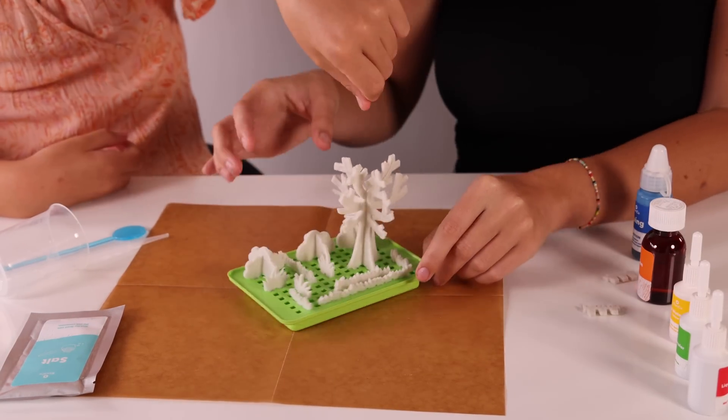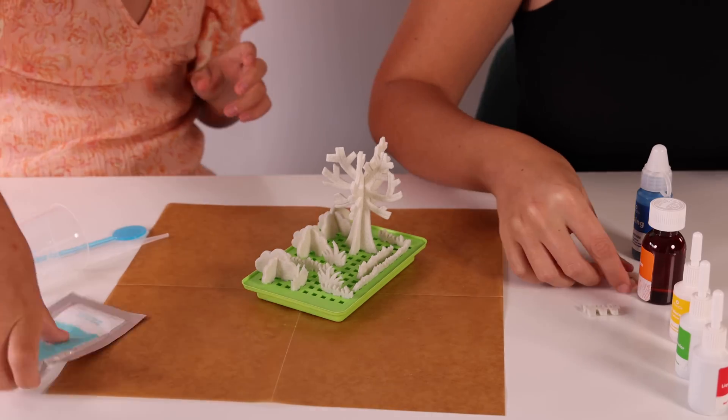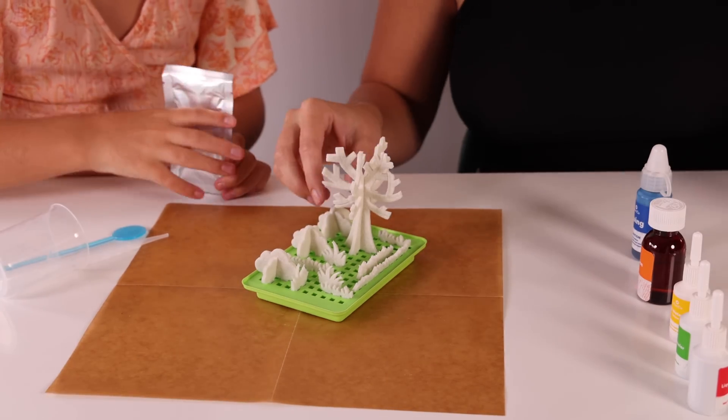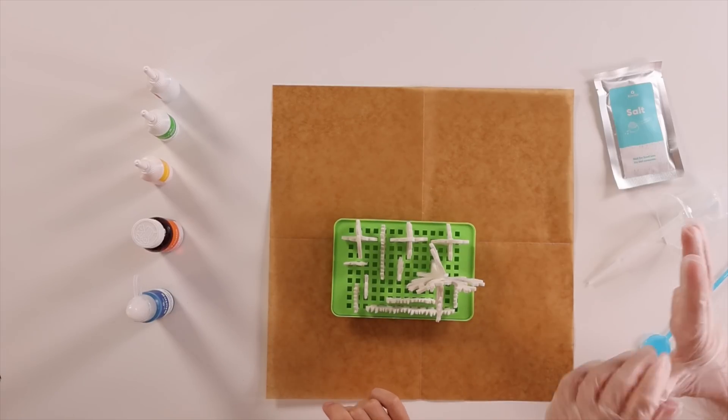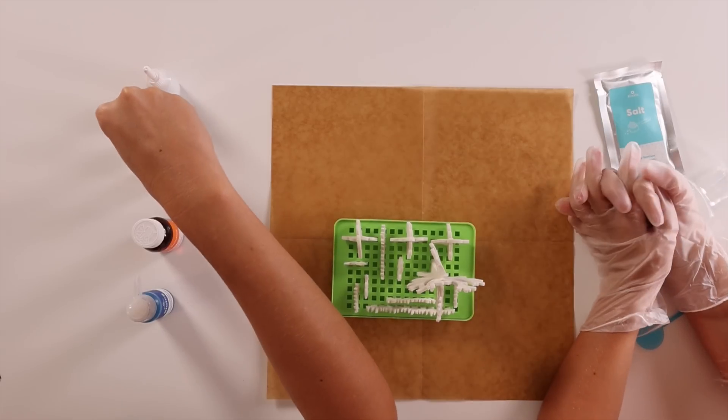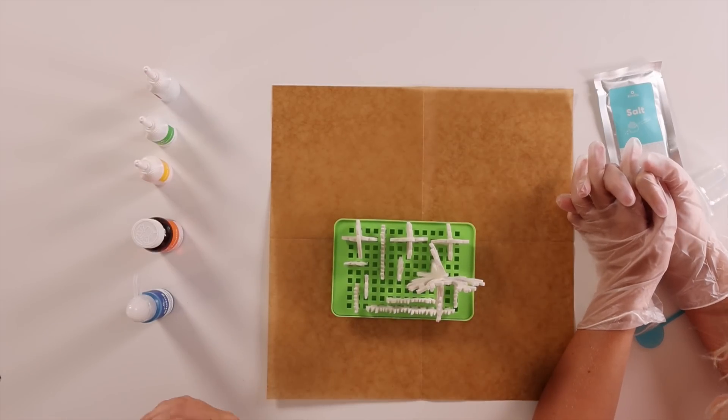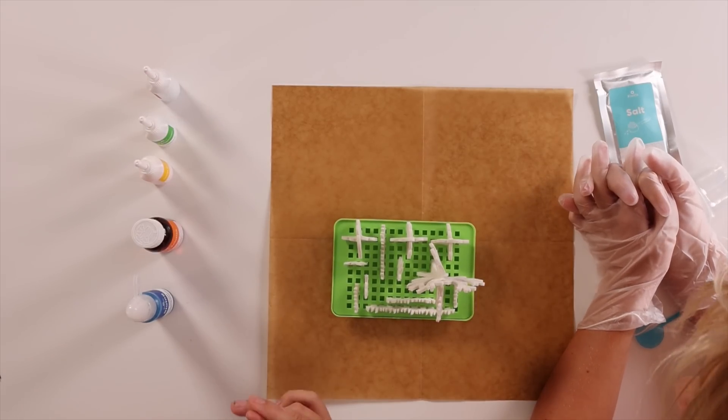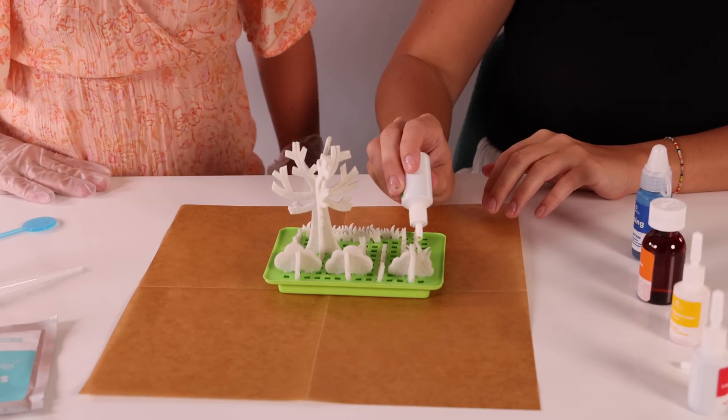Should we put this stuff on top of it? I think so. But first things first, we got to put on our gloves. Oh yeah, my gloves. Alright, so when we put our colors on the plants, we want to make sure that they are completely covered, but that we don't mix the red and the green together, because then it'll just make brown.